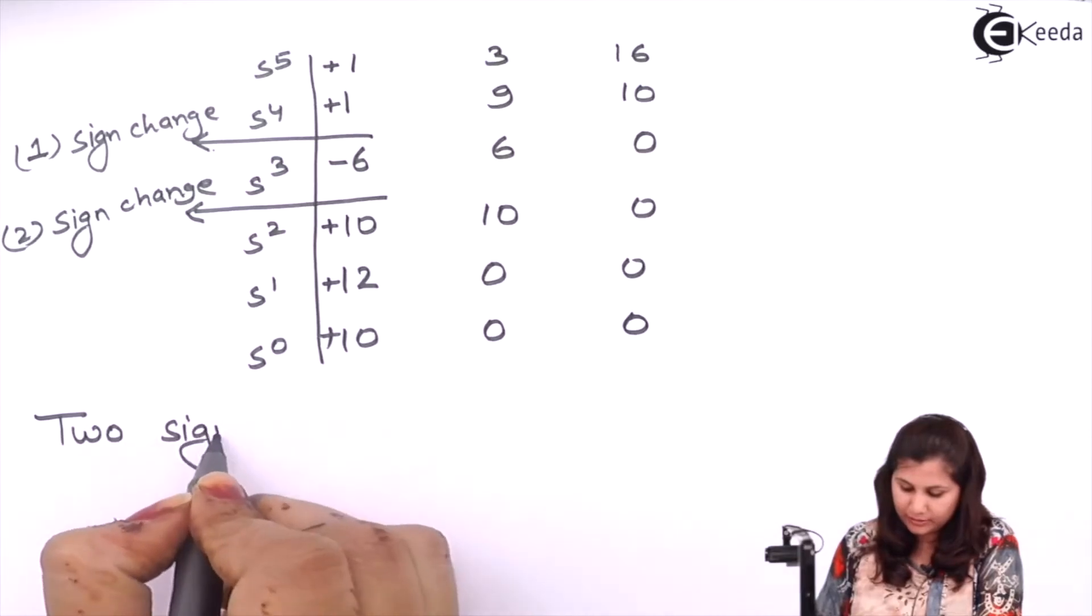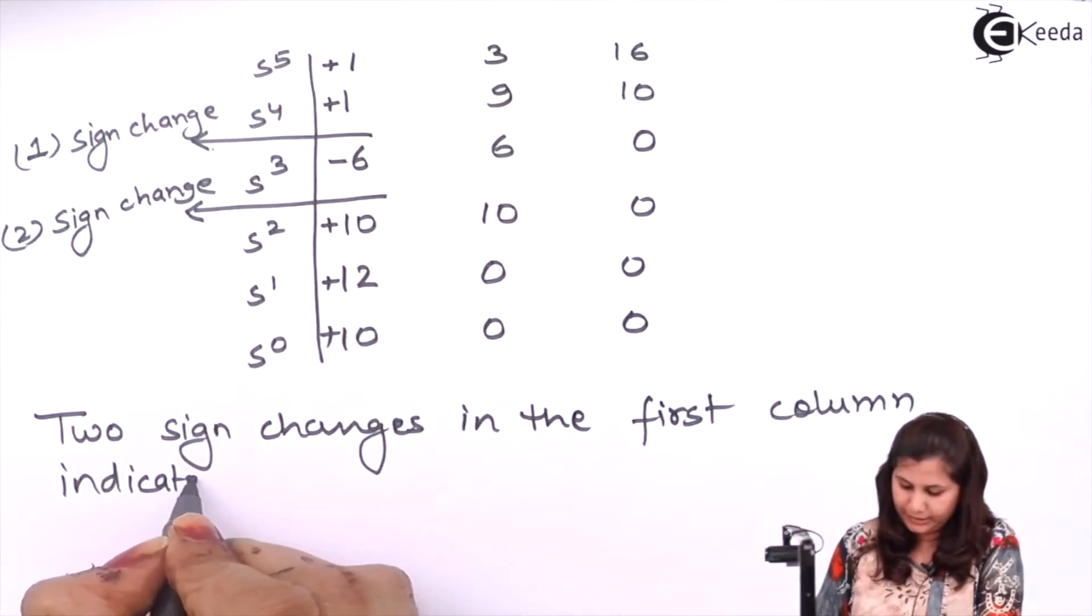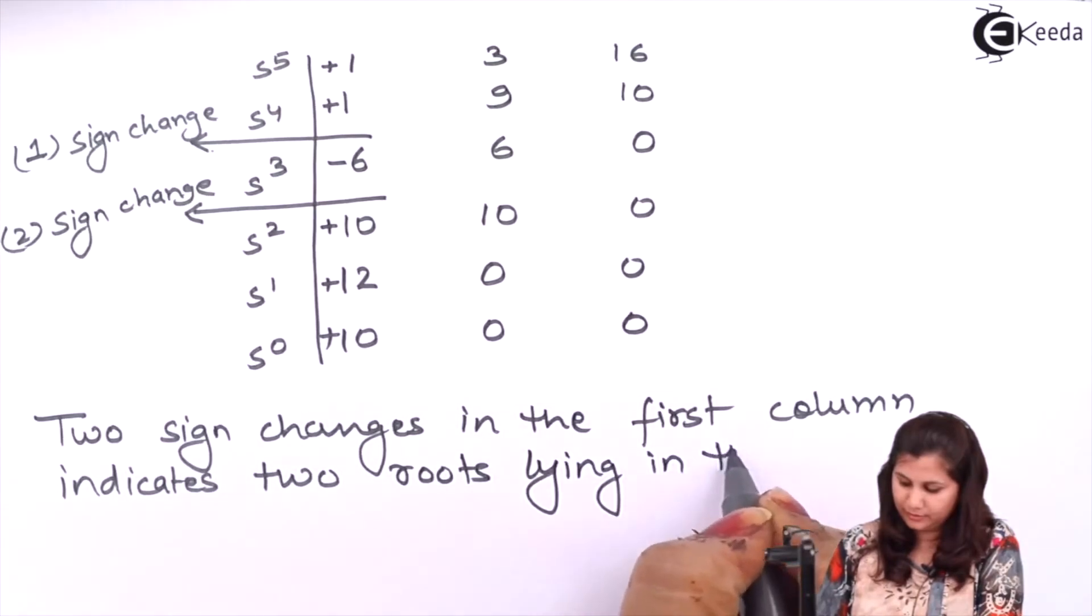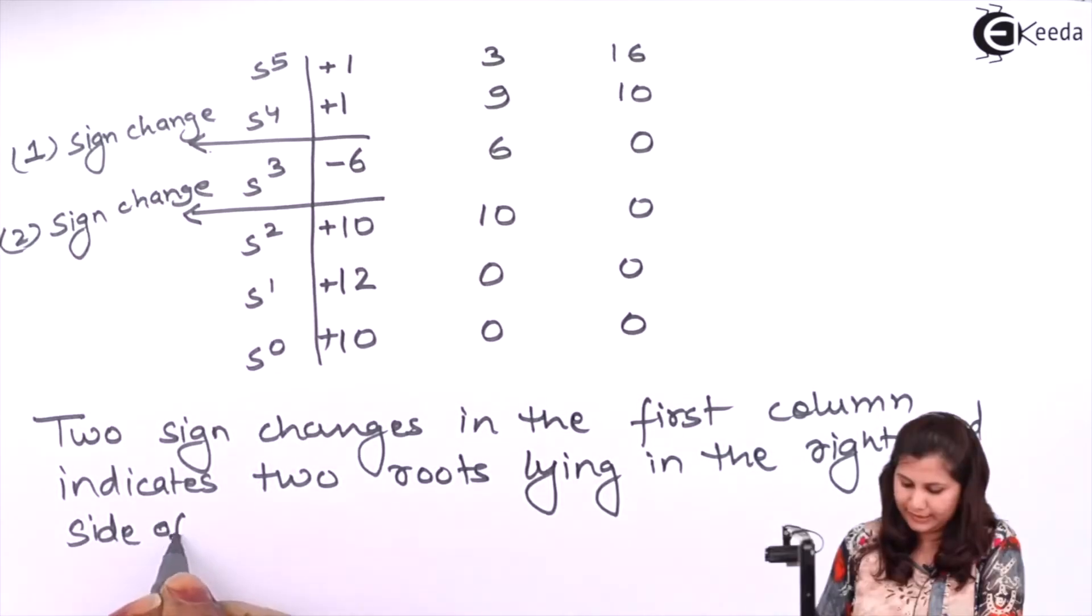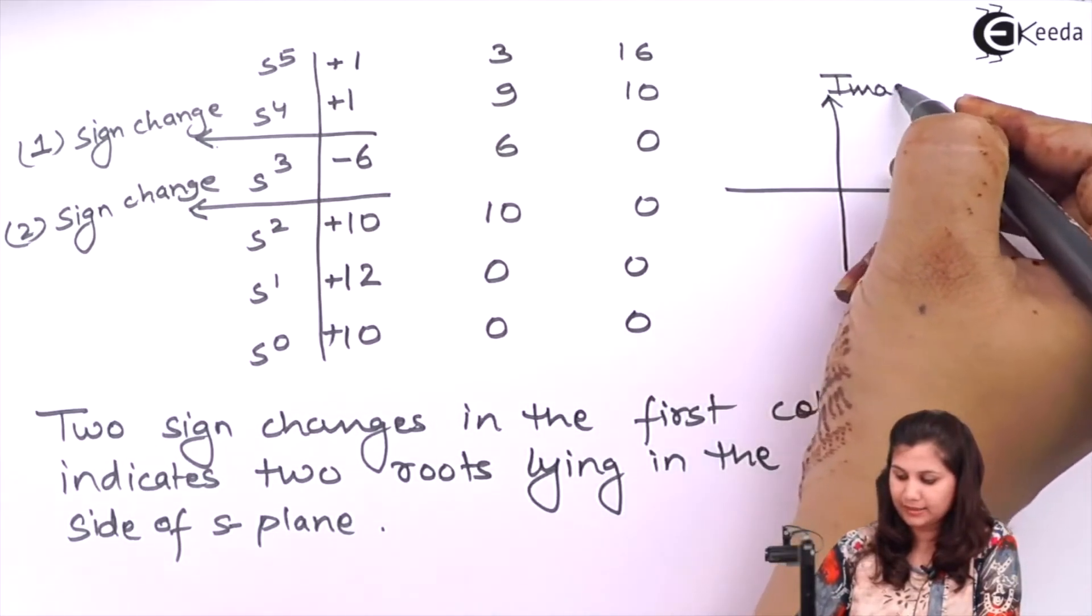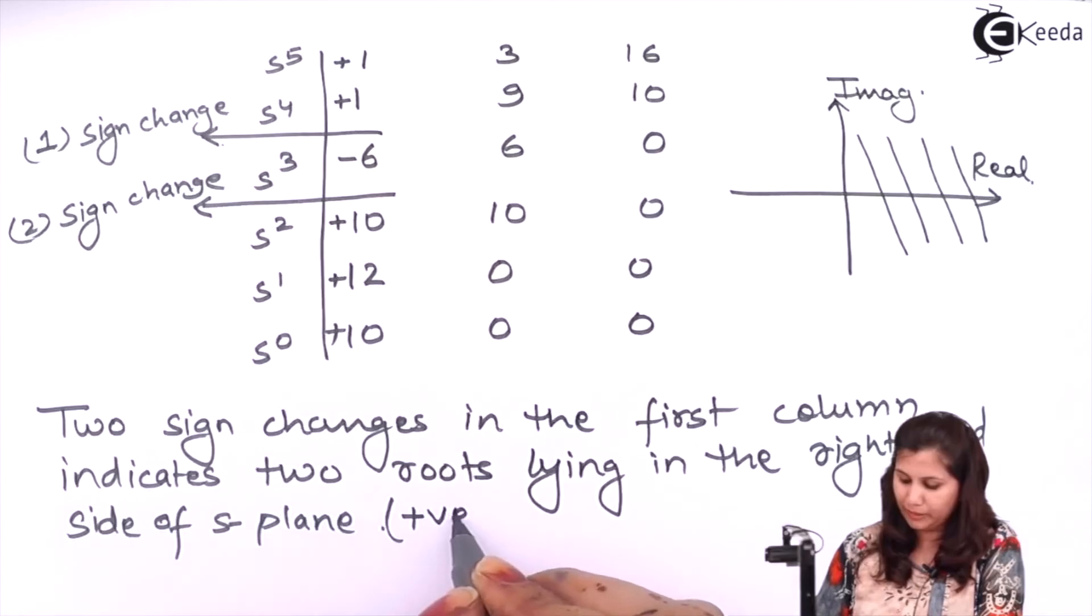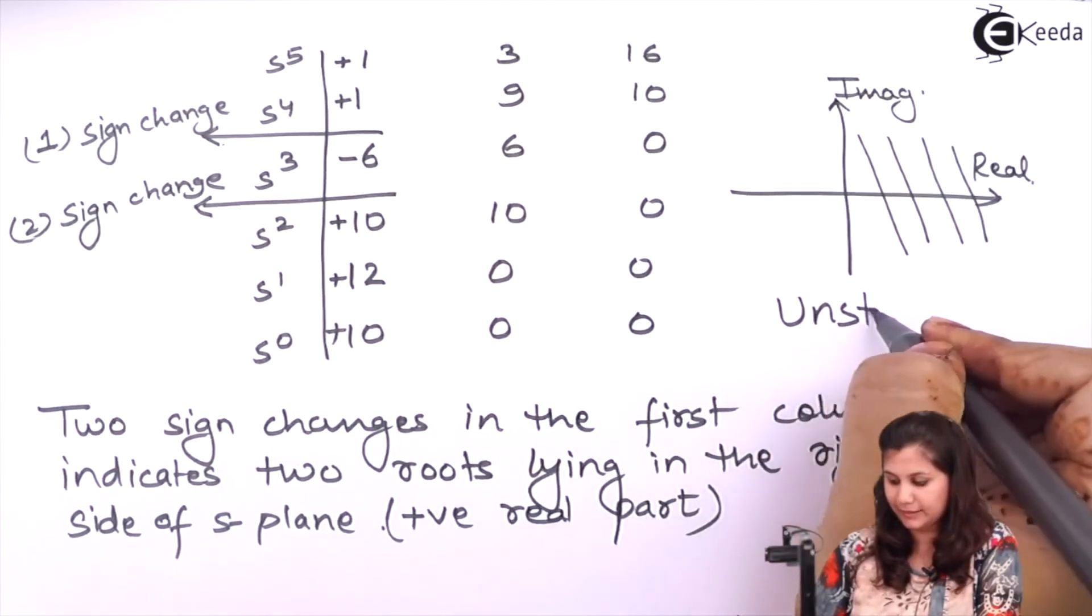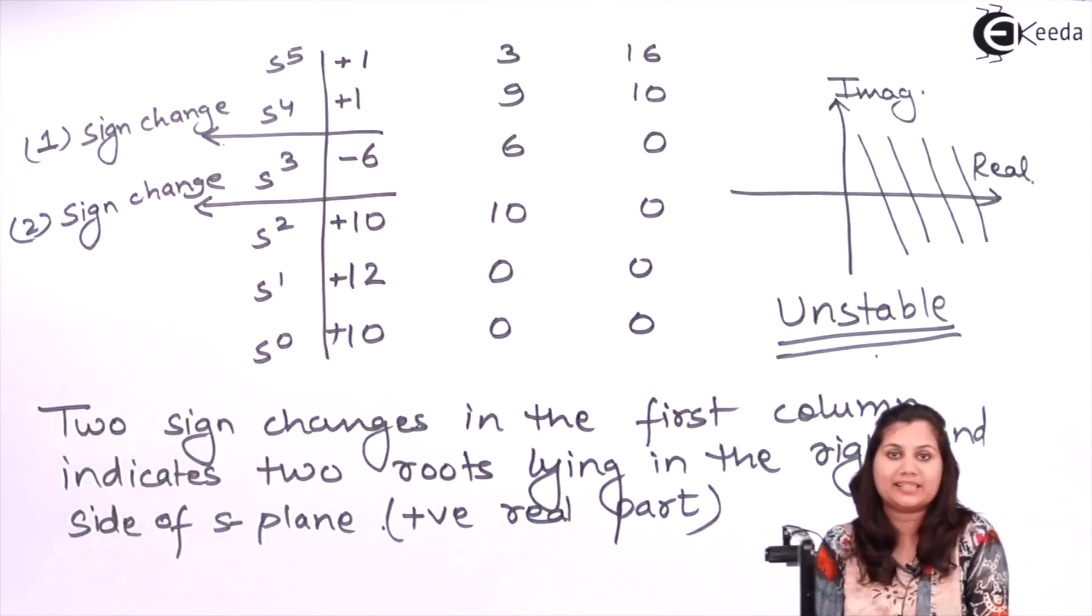So two sign changes indicates two roots lying in the right hand side of S plane. That is, this is the S plane, this imaginary axis, this is real axis, and two roots are lying on this side that is having the positive real part. And if the roots lie on the right hand side of the S plane, then the system is unstable. So this system which is given to us in the question, it is an unstable system. I hope this problem is clear to you. Thank you.